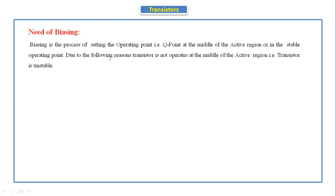Due to certain reasons the transistor does not operate in the middle of the active region — that is, the transistor is unstable. We will discuss what those reasons are. To stabilize the operating point, biasing is needed. The operating point is the intersection point of the DC load line and the output characteristics.